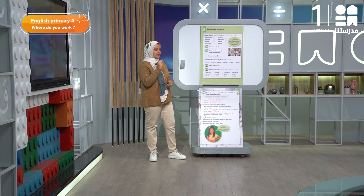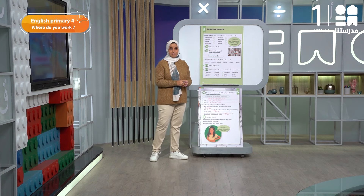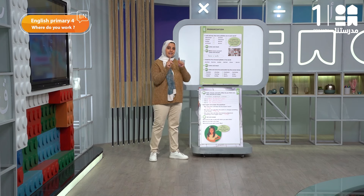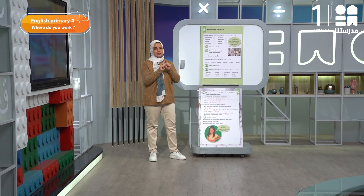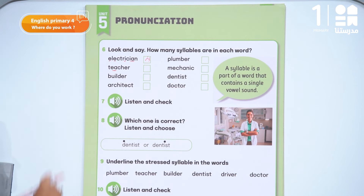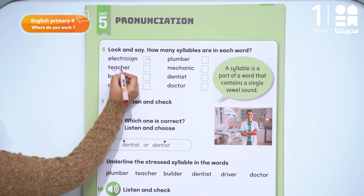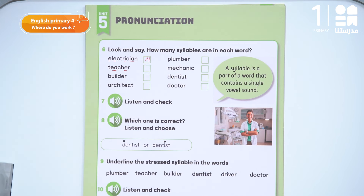Let's look at the following one: 'teacher.' In the same way — when we have two vowels together, I consider them one. So the E and the E I consider as one, and the E is one. How many syllables? Two syllables.